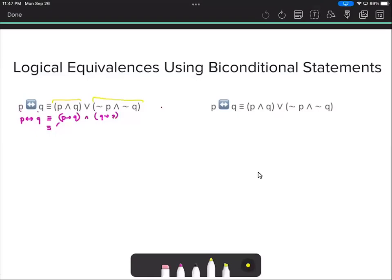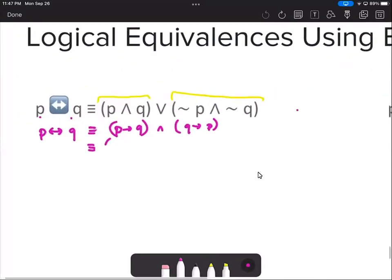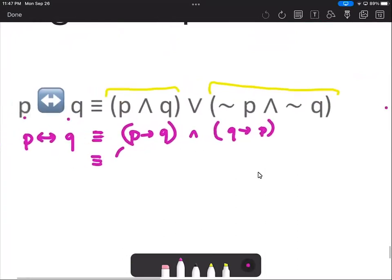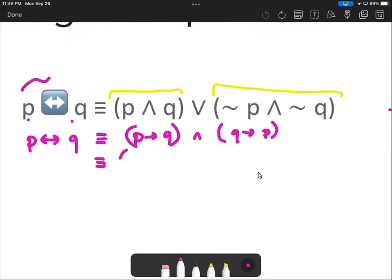Today we are going to have another example of proving logical equivalences using biconditional statements. We have the statement p if and only if q with p and q or not p and not q.